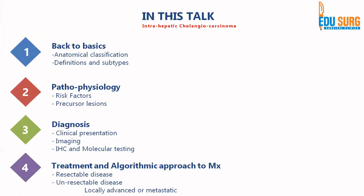We have already seen the anatomical classification, the definition and the subtypes in the previous video, as well as the risk factors. Now we are going to focus on how this disease presents clinically, some important commonly asked data questions, imaging features, and we are going to discuss in detail the imaging part, then the immunohistochemistry and molecular testing. In the upcoming parts of this series we will discuss the treatment and algorithmic approach to management of this disease.